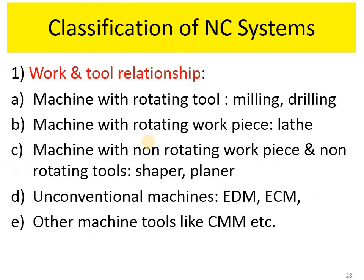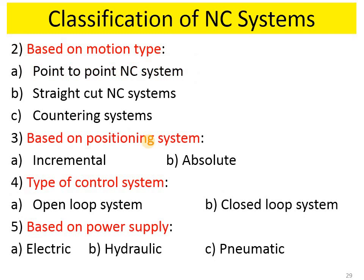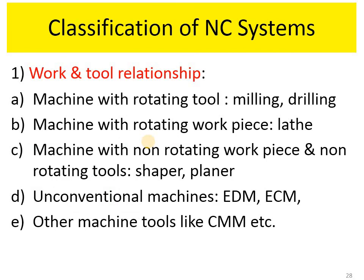The classification of NC systems includes: based on work and tool relationship — machine with rotating tool (milling, drilling), machine with rotating workpiece (lathe), machine with non-rotating tools (shaper, planer), and unconventional machining (EDM, ECM, CMM). Based on motion type: point-to-point, straight cut, contouring. Based on positioning: absolute and incremental. Based on control system: open loop and closed loop. Based on power supply: electric, hydraulic, and pneumatic. In the next lecture we will see these in detail. That's enough for today's lecture — thank you.